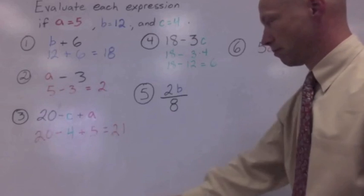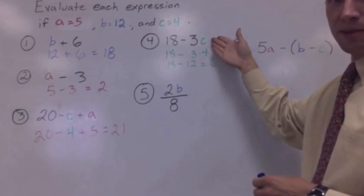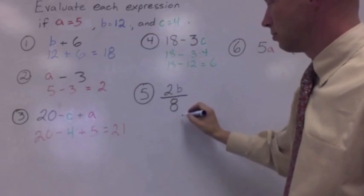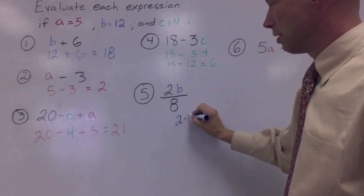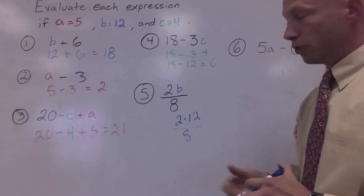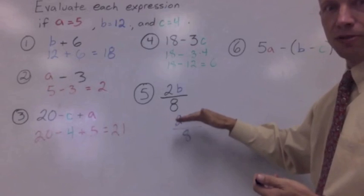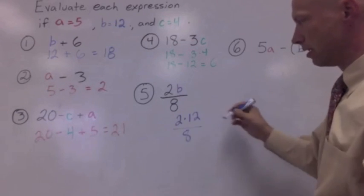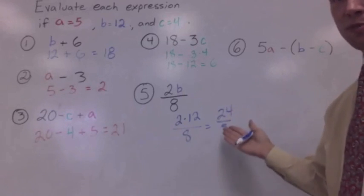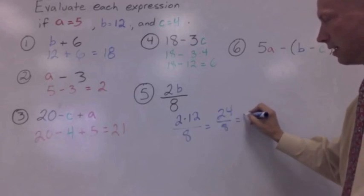Number five, 2B over eight. We already said in the last one, 2B means two times B, just like three times C. So let's start with that. That would be two times 12, two times 12 over eight. Doing our order of operations, we do parentheses and grouping symbols, and the fraction bar is a grouping symbol. So we're going to do the top of our fraction first. Two times 12, that's 24. The bottom stays the same. And you probably remember from sixth grade that 24 over eight, you just do 24 divided by eight, and that's three.